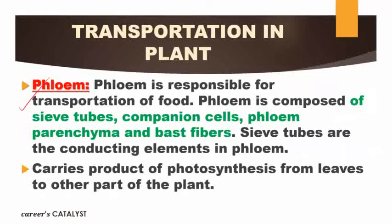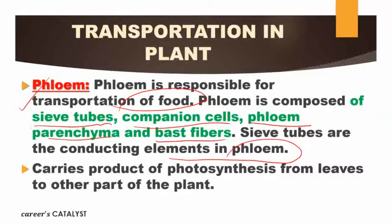Next is phloem. Phloem is responsible for transportation of food. Phloem is also a complex permanent tissue, composed of sieve tube, companion cell, phloem parenchyma, and phloem fiber. The sieve tube is the conducting element in phloem. It carries the products of photosynthesis — that is, food — from the leaves to the remaining parts of the plant body. This conduction of food is done by phloem tissue, specifically the sieve tubes.